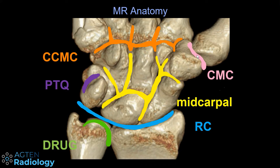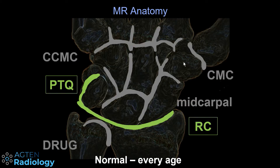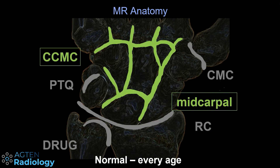Now let's have a look at the different communications that are possible. Communications between the radiocarpal compartment and the pisotriquetral compartment are normal in every age, so even in young persons if you do an injection there it's a normal communication. The same is true for the common carpometacarpal compartment and the midcarpal compartment — the communication here is normal in every age.